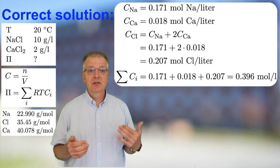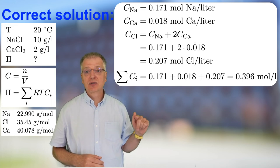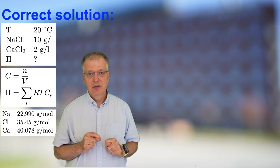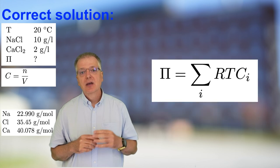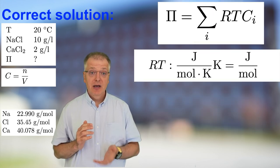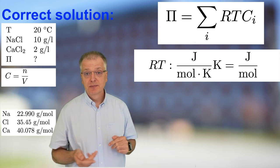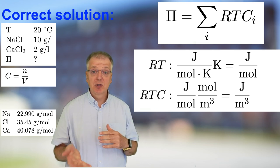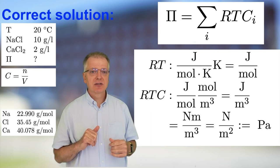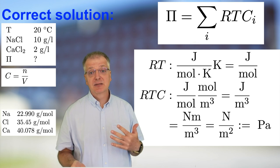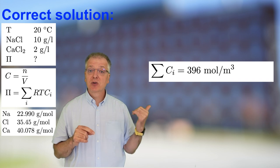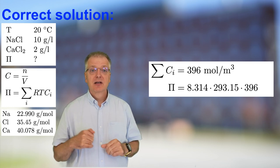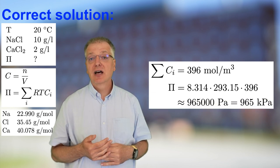The sum of all species now becomes 0.171 plus 0.018 plus 0.207, which is 0.396 mole per liter. Now there is only one unit error left to address: what are the units in the equation for osmotic pressure? With the gas constant r in joule per mole per Kelvin and temperature t in Kelvin, r times t becomes joule per mole. Using SI base units for concentration, we get joule per mole multiplied with mole per cubic meter, which is joule per cubic meter. Since joule equals newton meter, joule per cubic meter equals newton per square meter, which by definition is Pascal. Thus, expressing concentration in mole per cubic meter gives 8.314 times 293.15 times 396 mole per cubic meter, which gives us 965,000 Pascal, or 965 kilopascals.